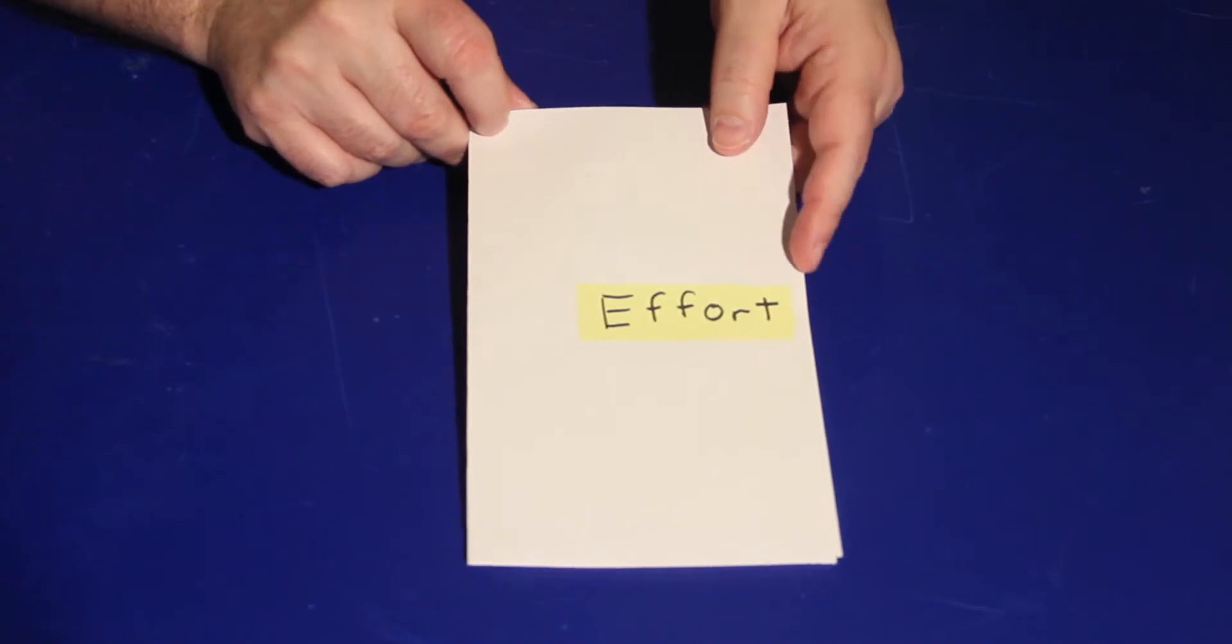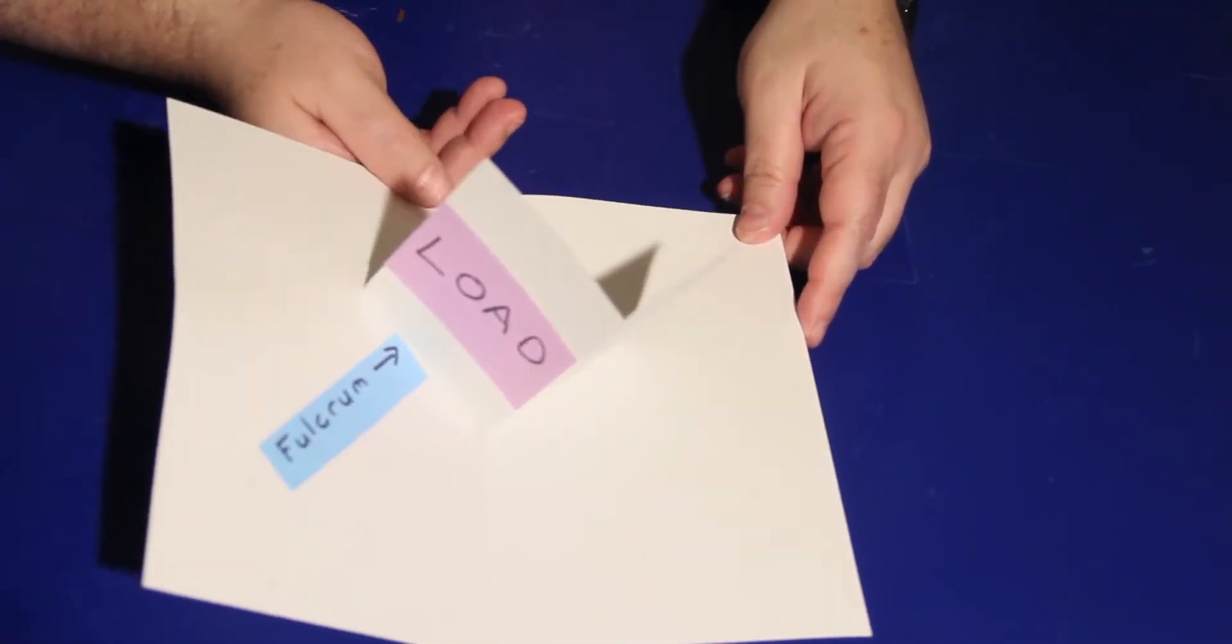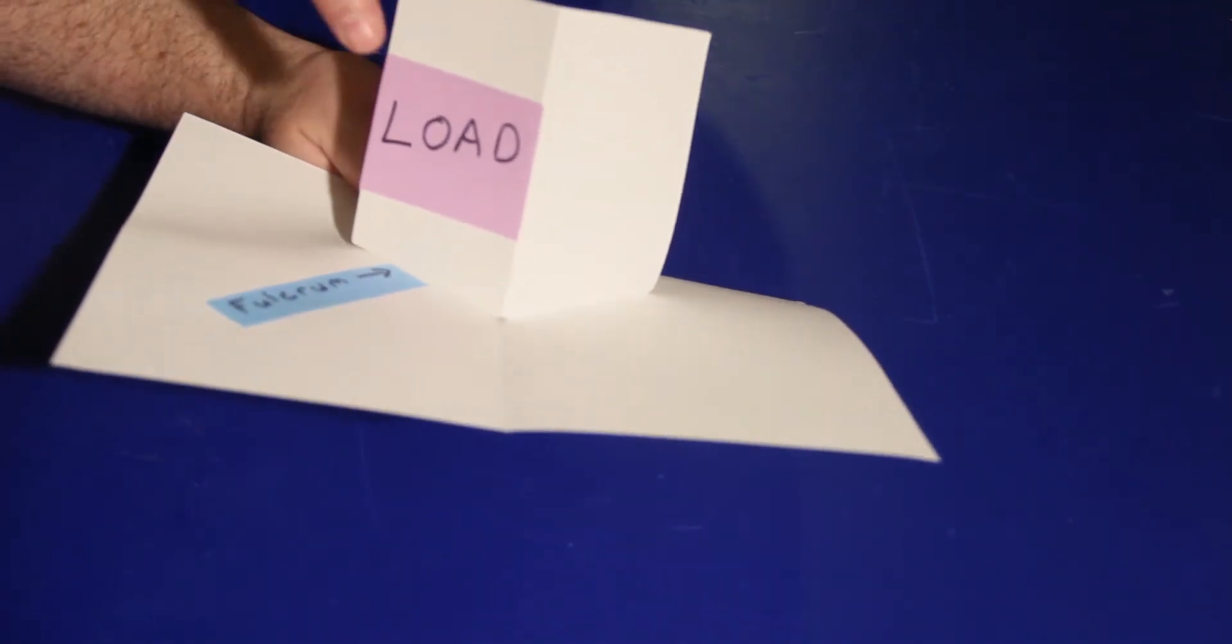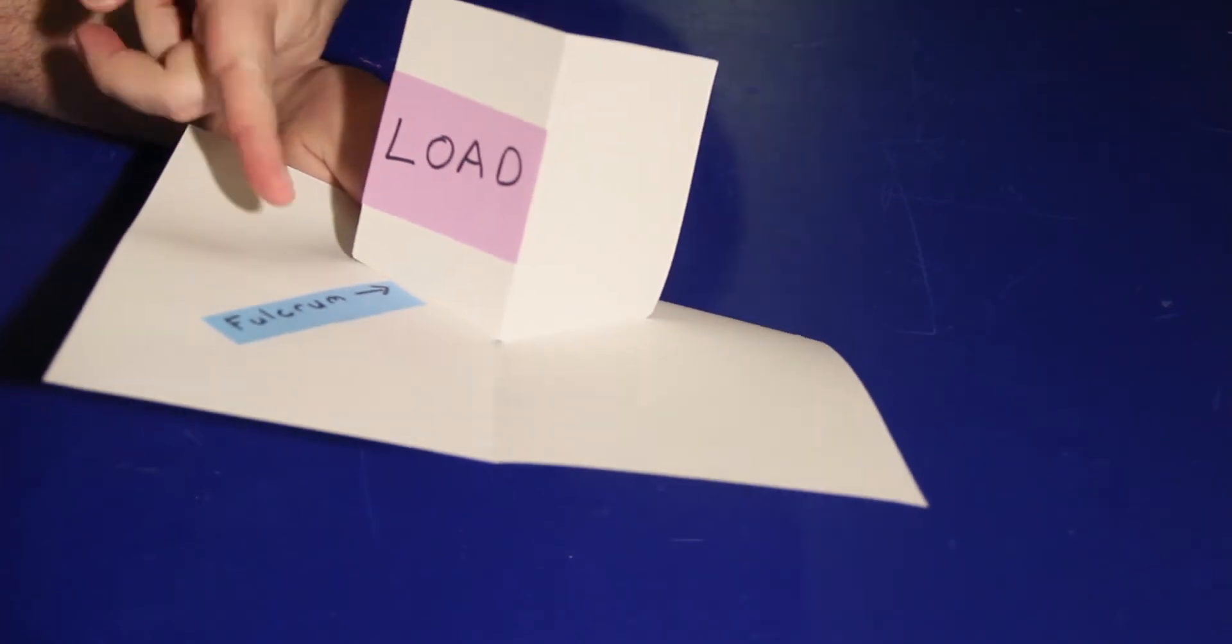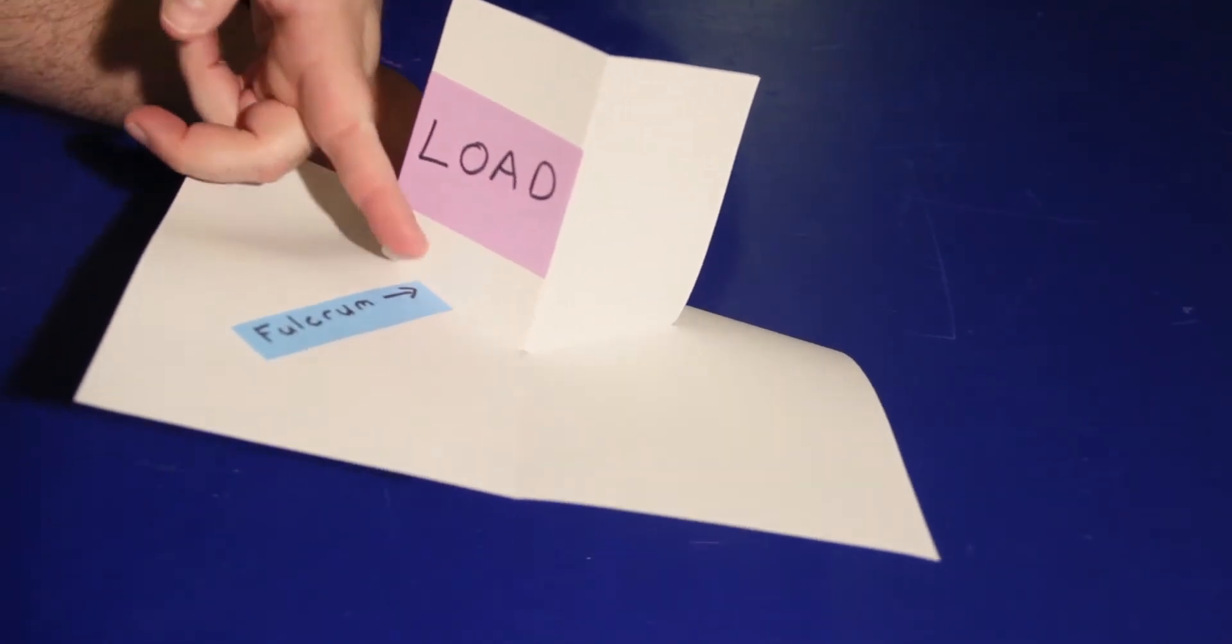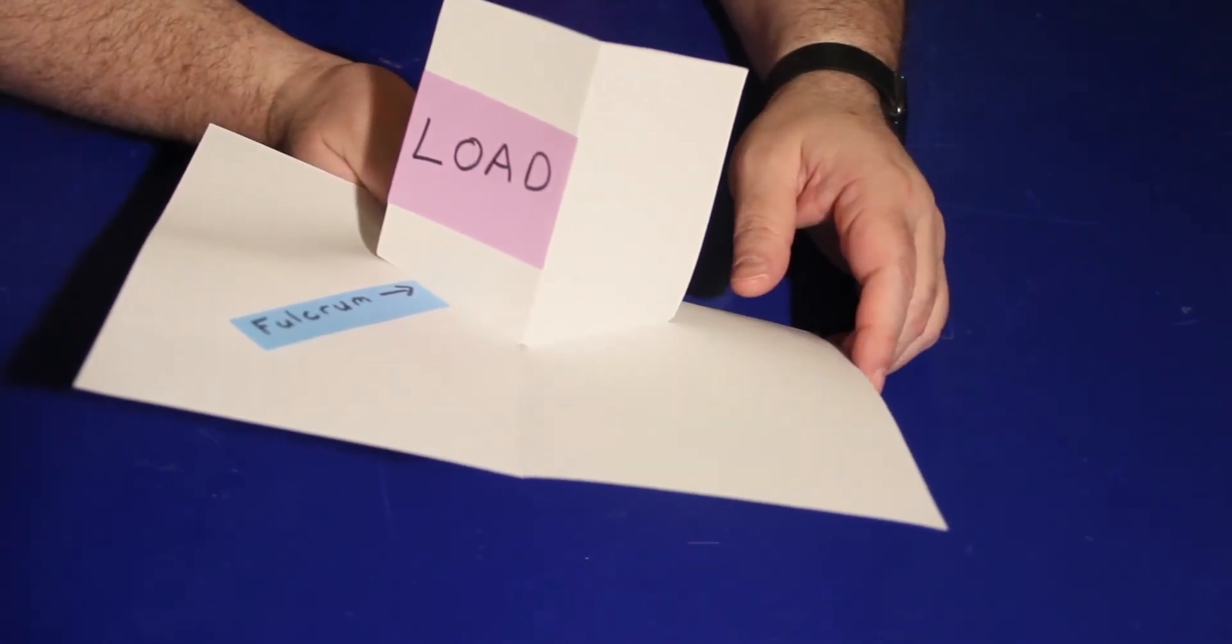In the case of pop-ups, the effort is the process of opening up the card. The force and motion from opening the card is then applied to the pop-ups inside, the loads. And the folds are the fulcrums for the pop-ups. Pop-ups may not be traditionally thought of as machines, but because they transfer the force and motion of opening them, they are, in fact, machines.